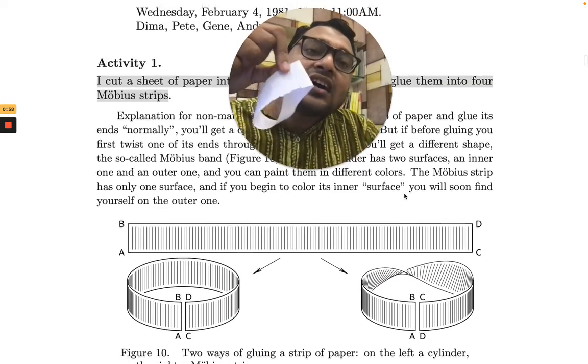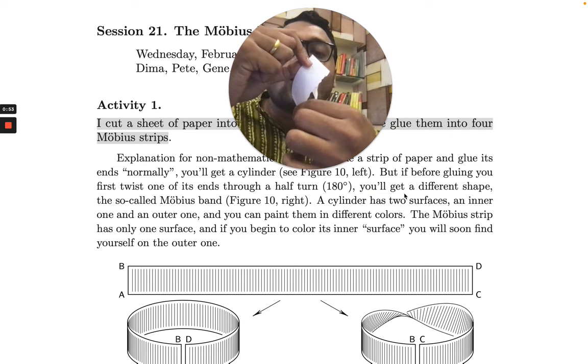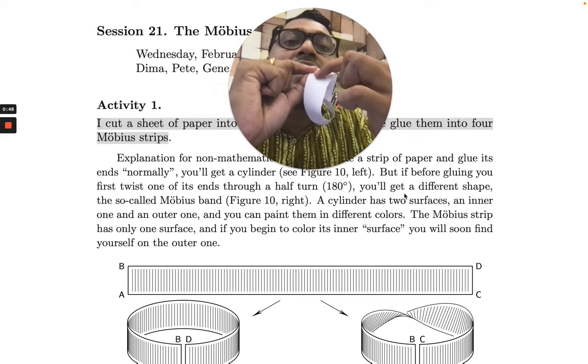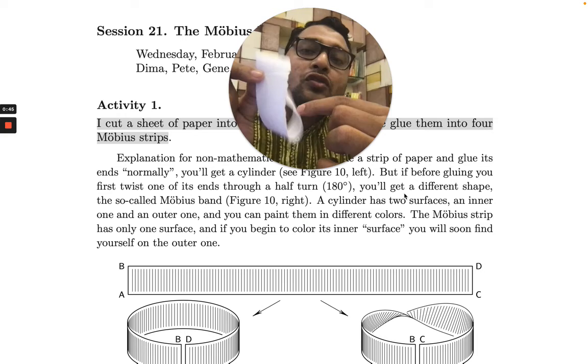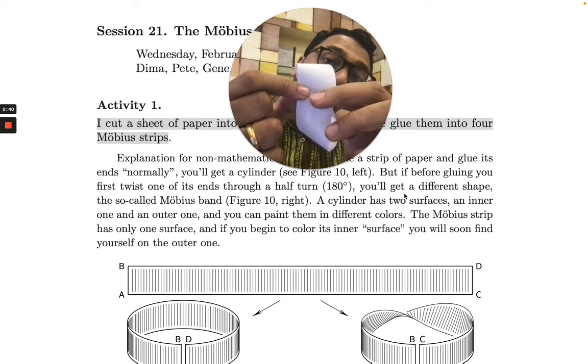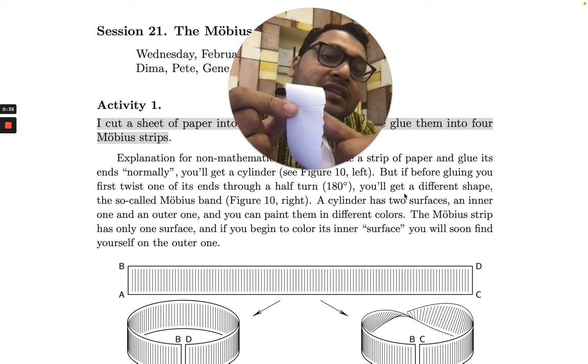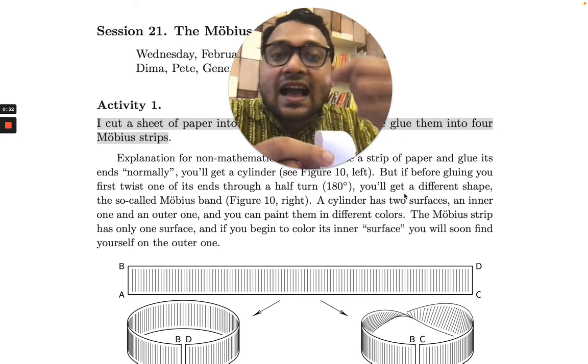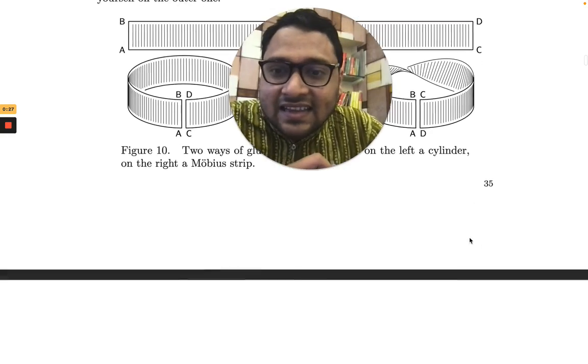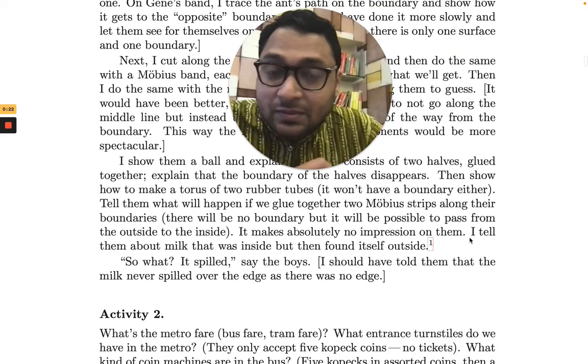...they find out in the process of this activity that the Mobius strip has only one side. So if you start here and if you roll down like this, if you go along, you will come beneath where you started, beneath the paper. You started here, you come beneath where you started. So it has one surface per se.